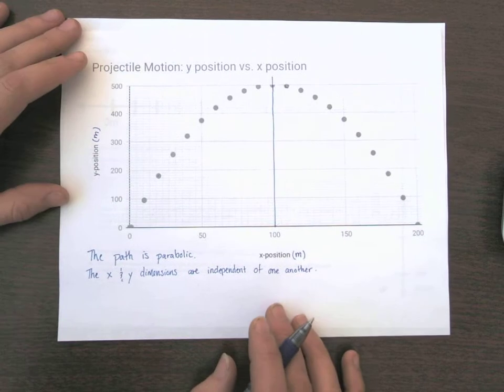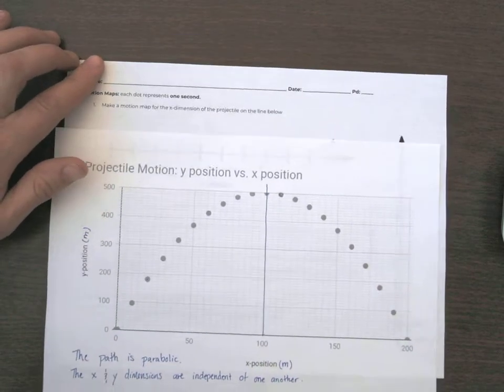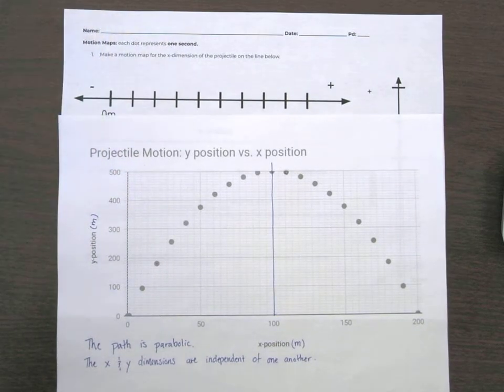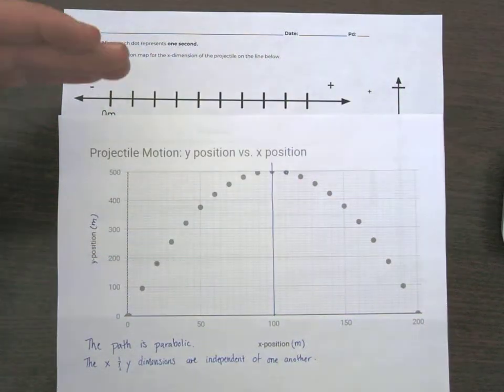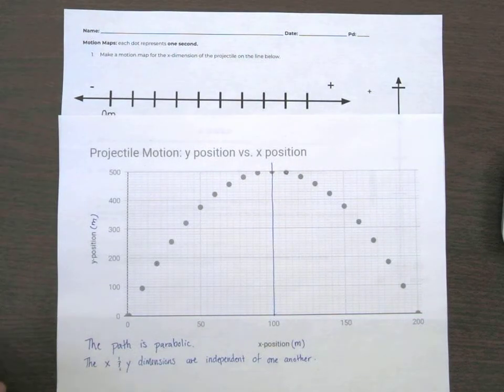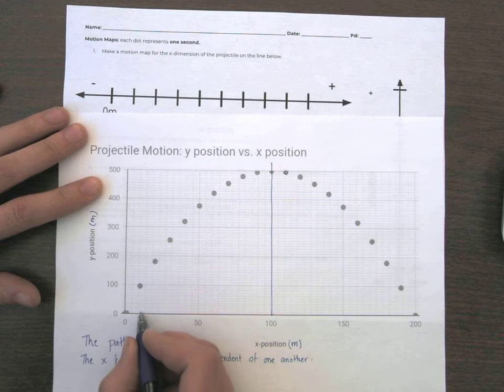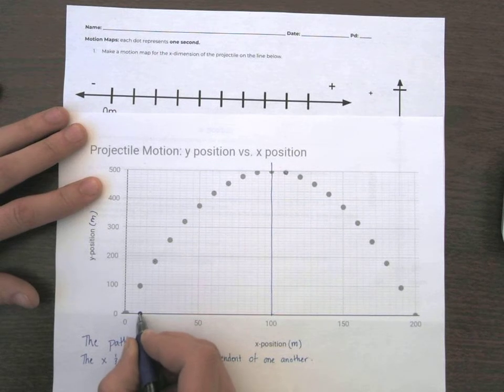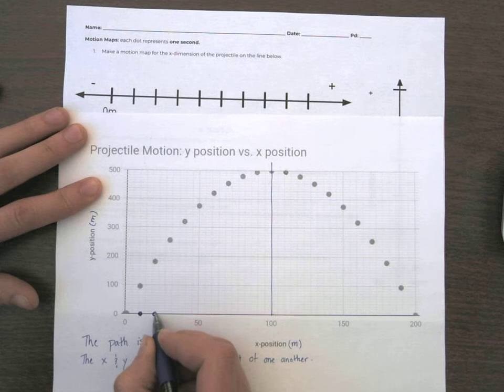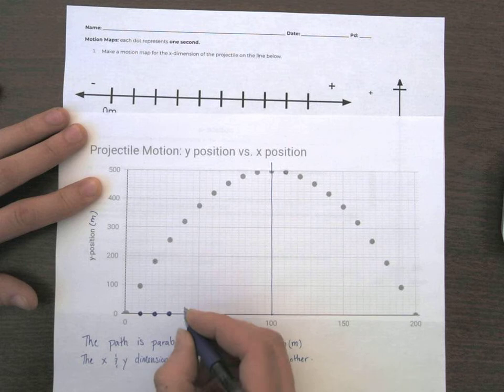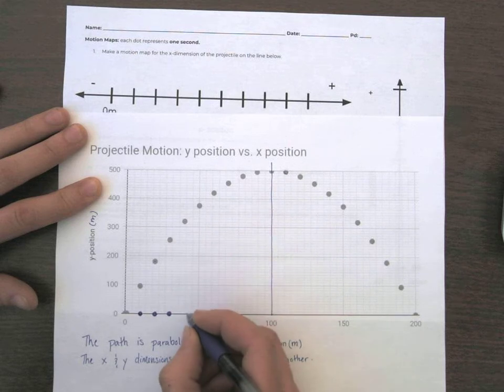So let's go ahead and take a look at this. If we flip over the worksheet, it says make a motion map of the projectile in the X dimension below. It wants to say on this one-dimensional line here, make a motion map. Say where it is, but only in the X dimension. So the easiest way to do this is to think about where is this object in the X? Let's just drop it down to the X axis. And it's about right there. And if we go through and we do that for all of them, we start to see...